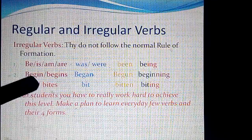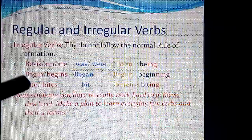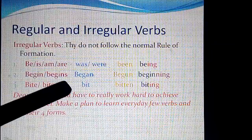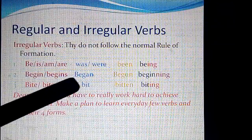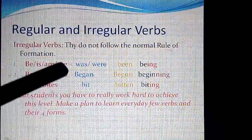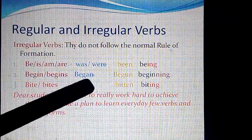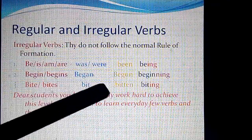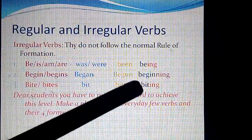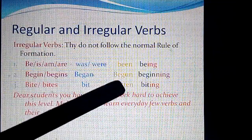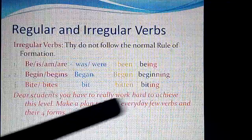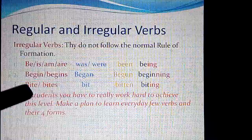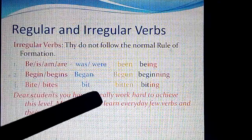Now, another irregular verb: 'begin'. Adding -s or -es gives 'begins'. The past tense is 'began' — it does not take -ed, it changes to -an. Then V3 is 'begun' with -un added, and the -ing form is 'beginning'. Similarly, 'bite', 'bites', past tense 'bit', V3 'bitten', and -ing form 'biting'. These irregular forms do not take an -ed ending.